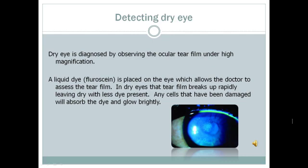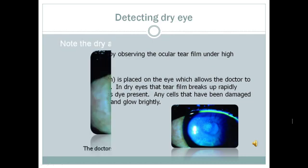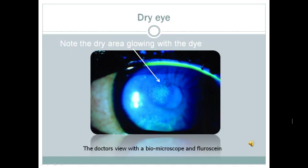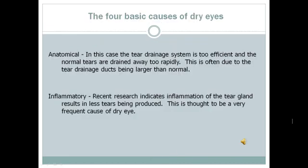Any cells that have been damaged by the dryness will absorb the dye and glow brightly. This is the view the doctor sees when examining a patient's eyes. With the microscope and the fluorescein dye, note the cornea has a bluish color from the dye. Also note the glowing spots in the center where the cornea has been damaged by dry eyes. There are four basic causes for dry eye. First is anatomical — cases where the tear drainage system is too efficient and the normal tears are drained away too rapidly, resulting in a dry eye.